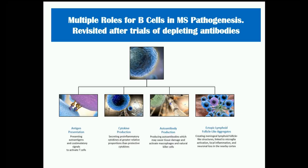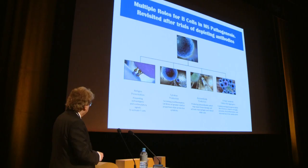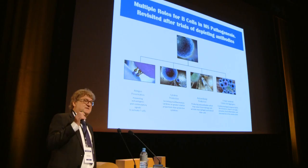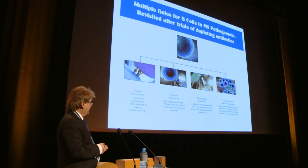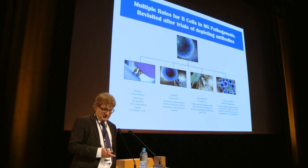A re-definition of the role of B cells came from the success of B cell-depleting therapies. The traditional view was that B cells serve as a factory of autoantibodies that may be demyelinating. However, kinetics from rituximab and ocrelizumab trials focused on a more proximal step: B cells acting as antigen presenters to T cells, driving T cell proliferation and cytokine production.